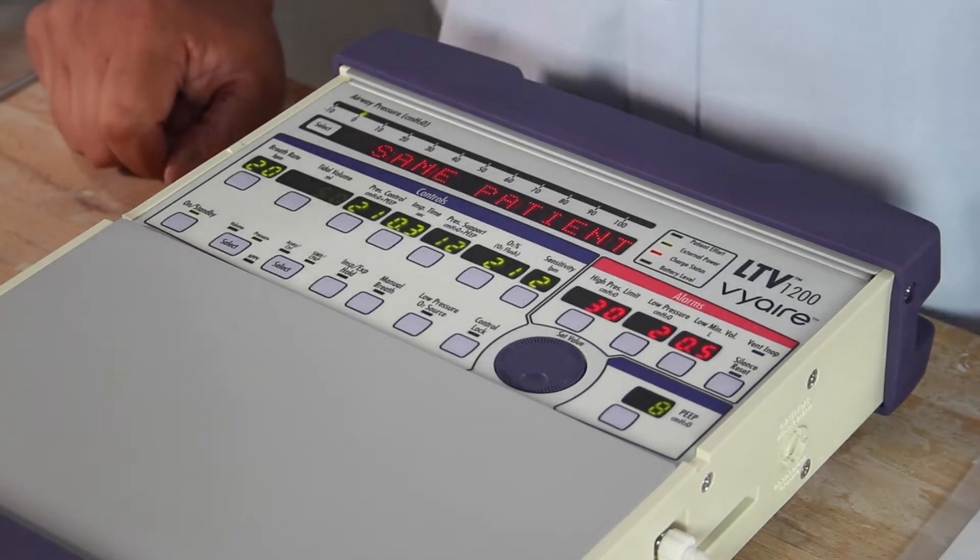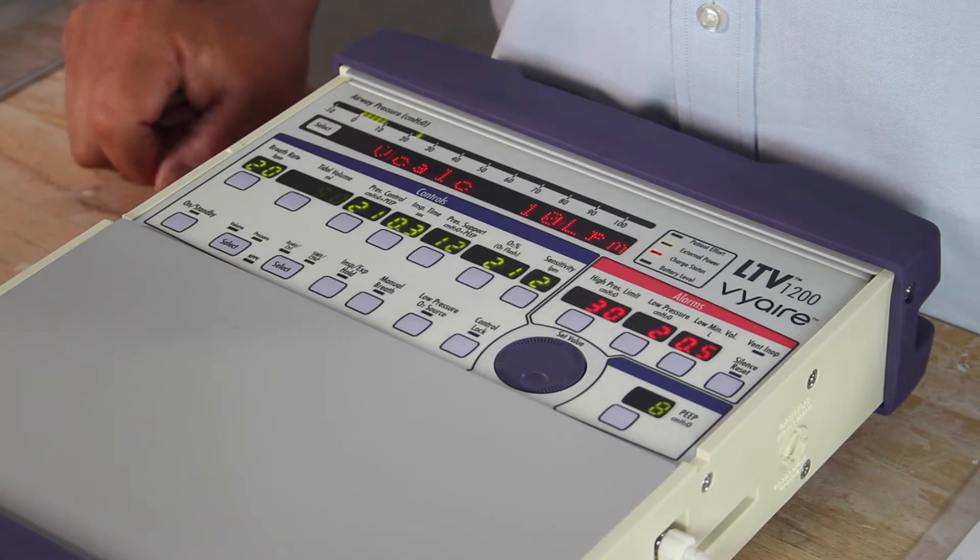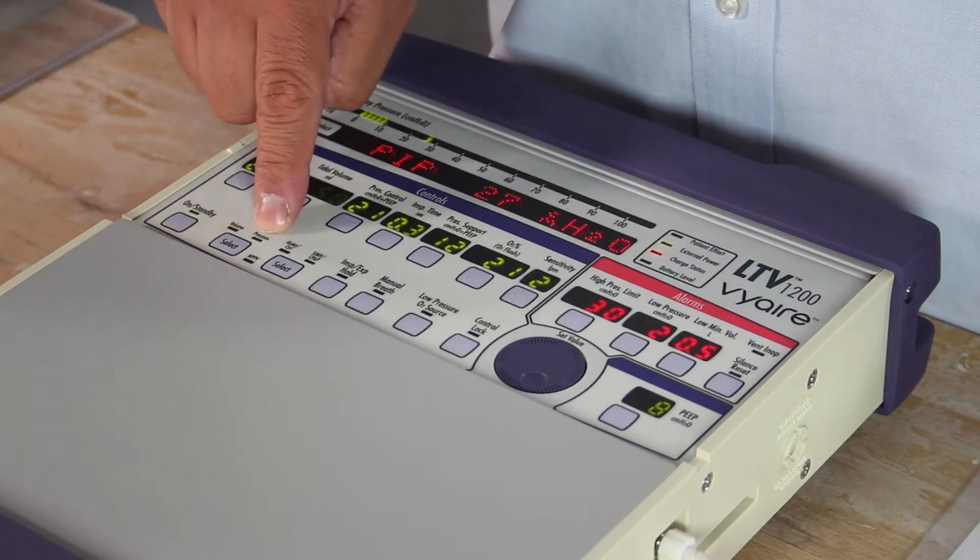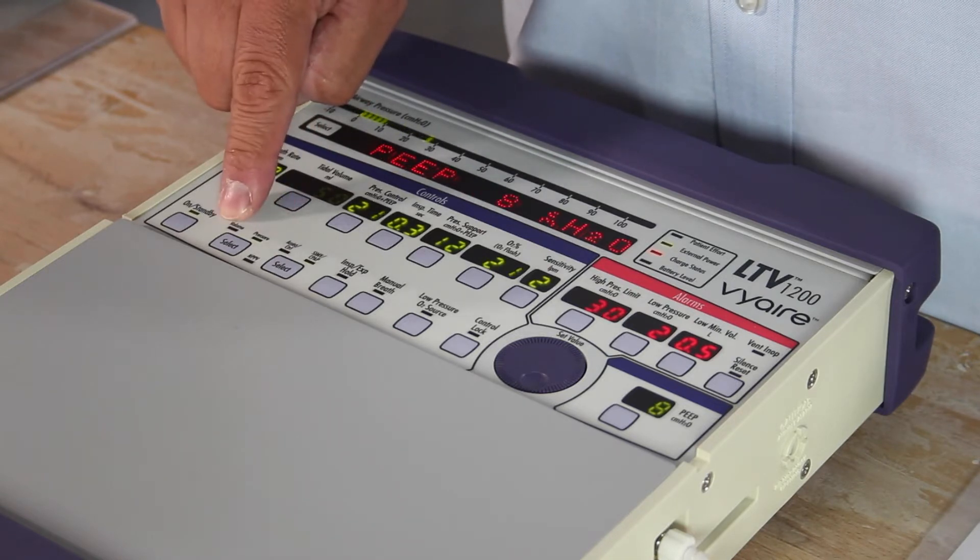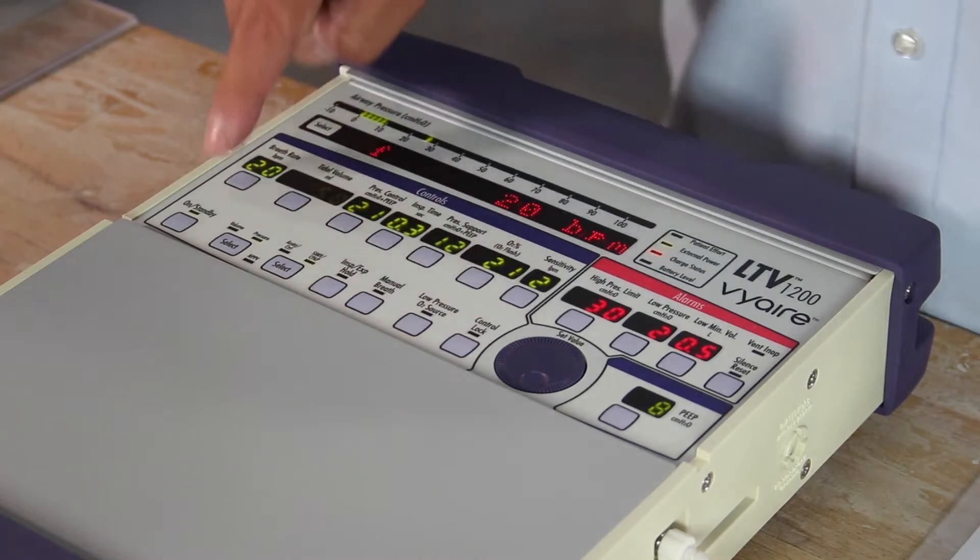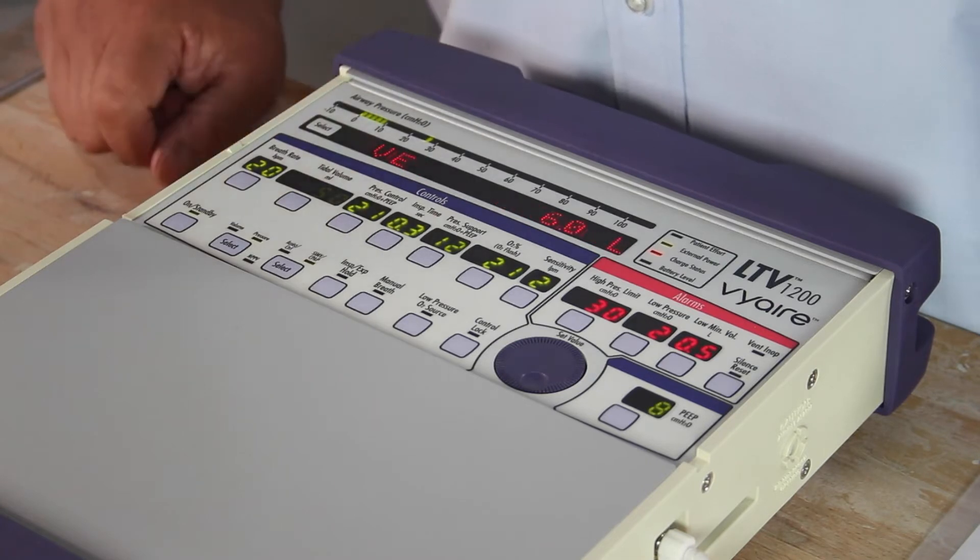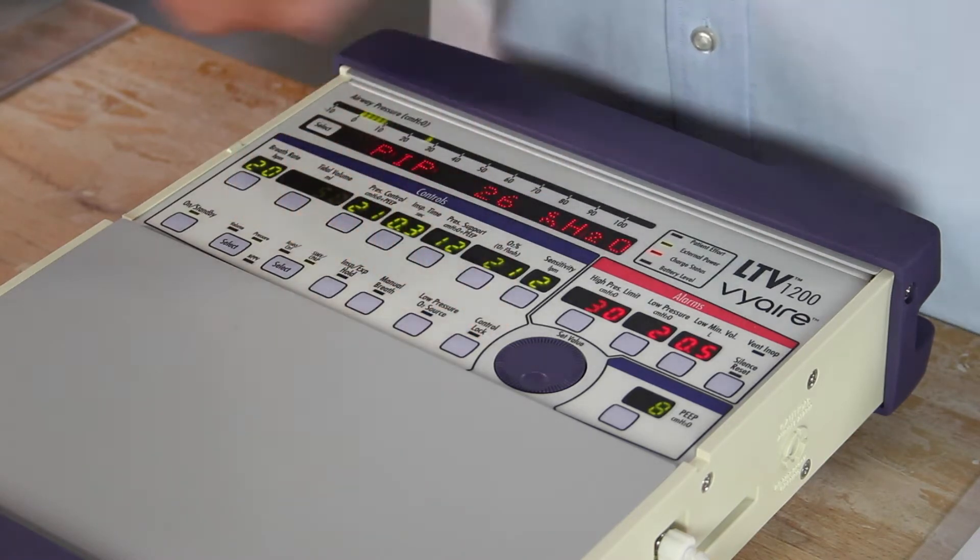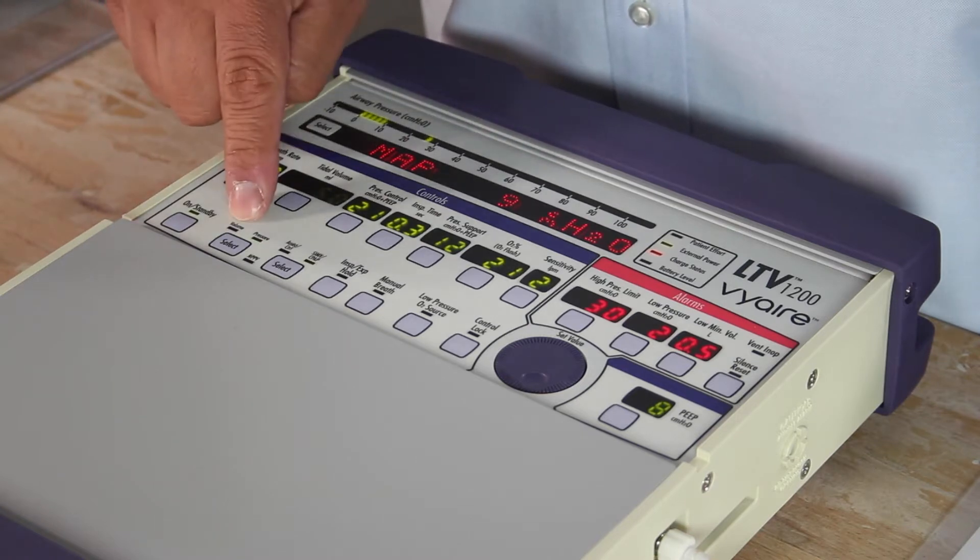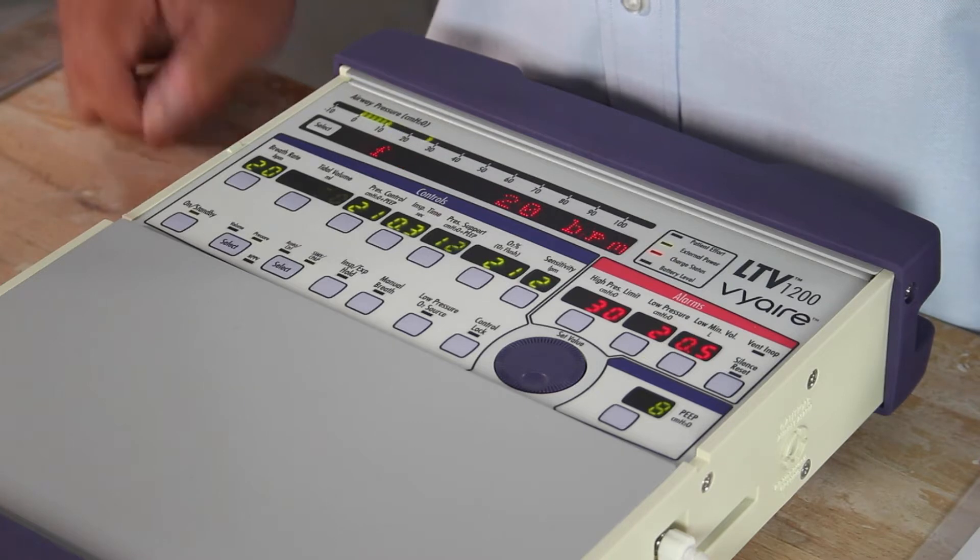The ventilator can be run in volume and pressure mode. Currently we're in pressure. Whichever mode is being highlighted or whatever we're currently using on the ventilator itself is highlighted. Whatever's dimmed or dashes is not being used. So for instance, dimmed means we're not using that currently. Right now volume is not being used, pressure is highlighted. Pressure is currently being used, pressure control of 21.